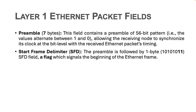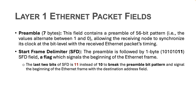Next, the preamble is followed by a 1-byte start frame delimiter or SFD field, a flag which signals the beginning of the Ethernet frame. Indeed, the last two bits of the SFD are 1-1 instead of 1-0, breaking the preamble bit pattern and signaling the beginning of the Ethernet frame where the first field is the destination address.